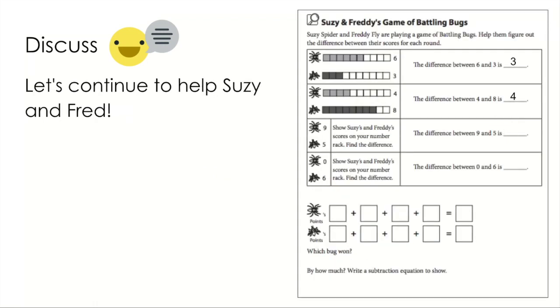Let's continue to help Suzy and Fred. Suzy has nine and Freddie has five. The difference between nine and five is four. Good job. Let's do another one. Suzy has zero and Freddie has six. Can I take six away from zero? Nope. So I'm going to switch those. Six take away zero is? That's right, zero.